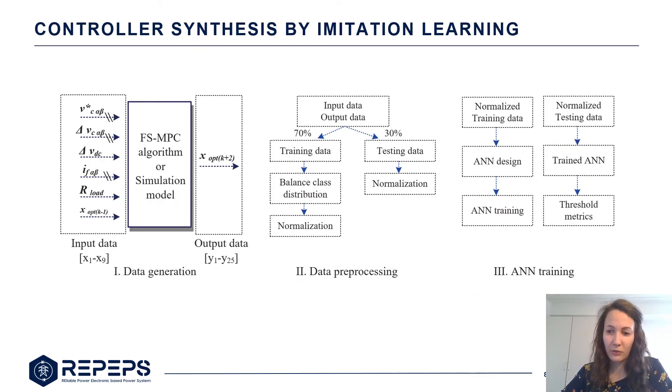To do that we follow the traditional flow on neural network training. We start with data generation. In this case we use the finite set MPC algorithm or we can also use the simulation model. We put the input data the same as the input data that also the MPC algorithm would receive and then we calculate the output data. We proceed with the data preprocessing and we finally train the neural network in the final step.